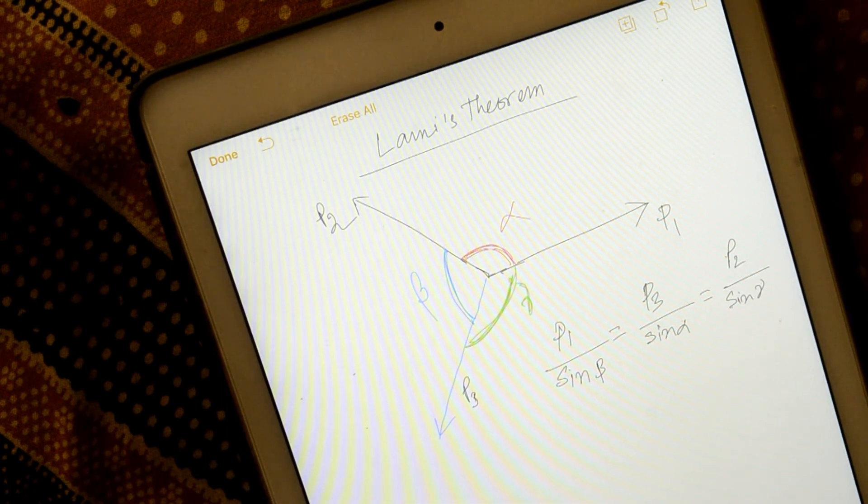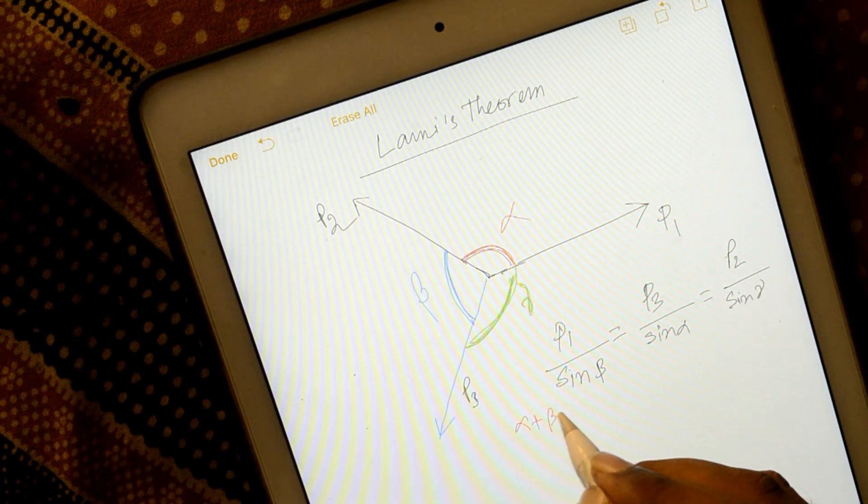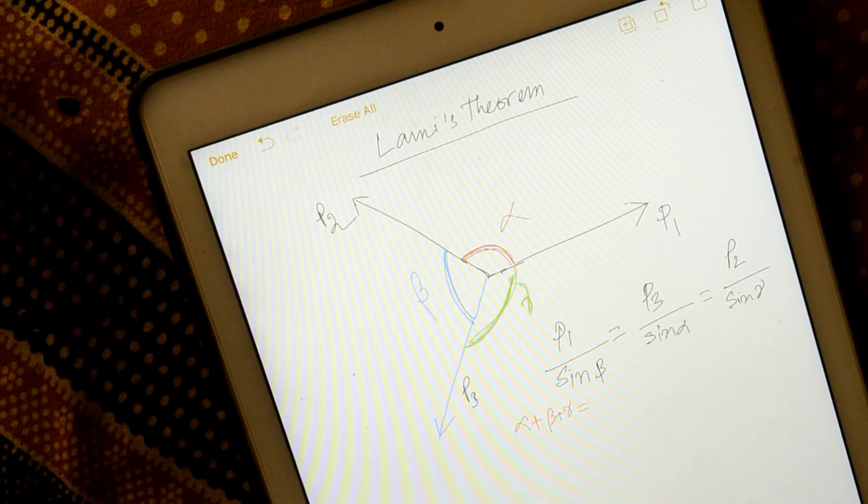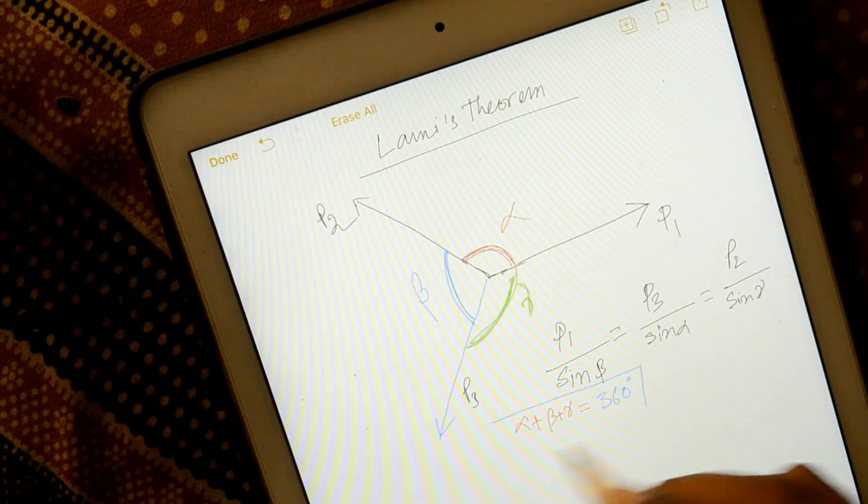I know the system is in equilibrium. Alpha, beta, gamma must be 360 degrees. Must be 360 degrees.